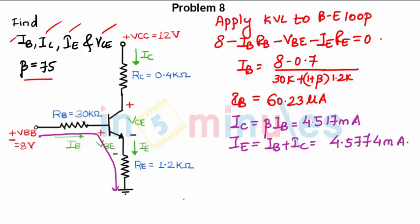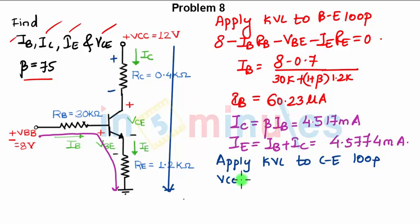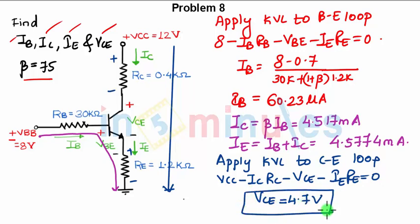Now we have all the values and need to find VCE. We apply KVL to the collector-emitter loop, from this point to this point. The equation is: VCC minus IC×RC minus VCE minus IE×RE equals 0. Substituting all known values, VCE comes out to 4.16 volts. This is how we do the analysis for finding all the parameters asked in the question.